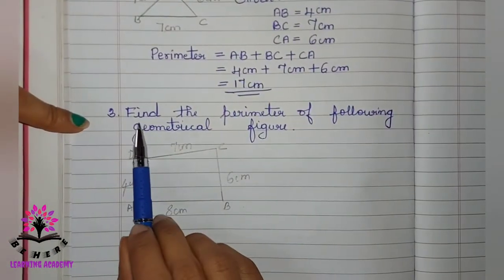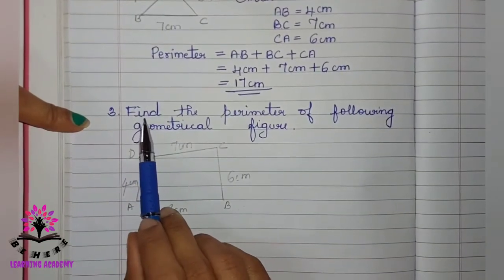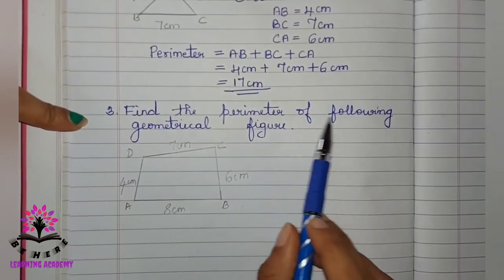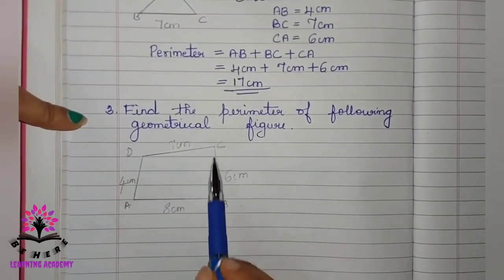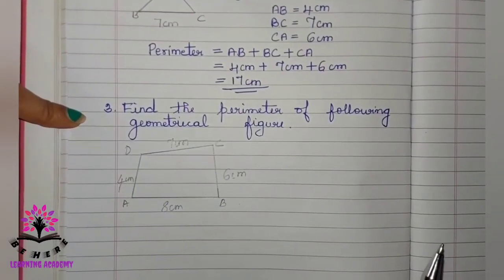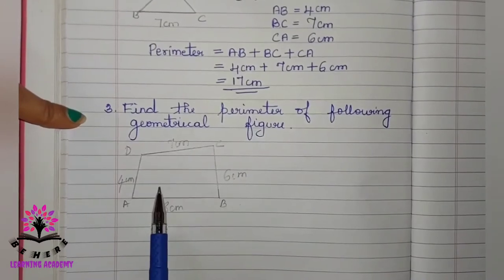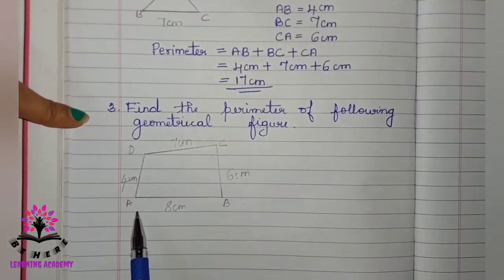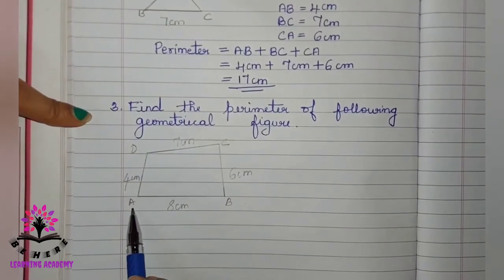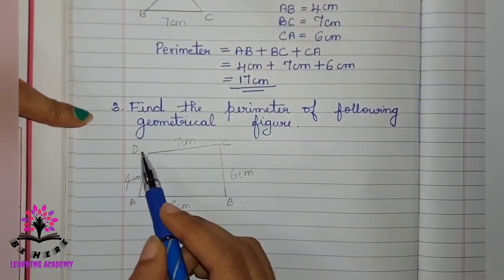Now, let us solve the second problem. Find the perimeter of following geometrical figure. Here, they have given a four-sided geometrical figure. We call it as a parallelogram. Now, here you see the sides of the geometrical figure A, B, C and D.